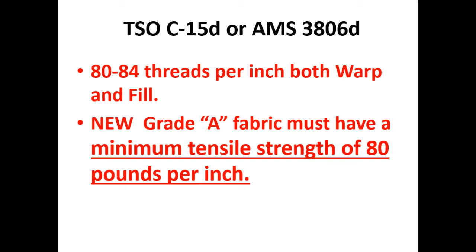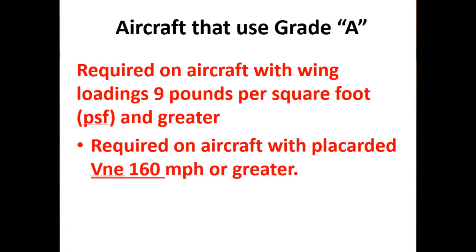TSO C15D fabric must have 80 to 84 threads per inch both warp and fill. The important thing we really need to remember: new Grade A fabric must have a minimum tensile strength of 80 pounds per inch.